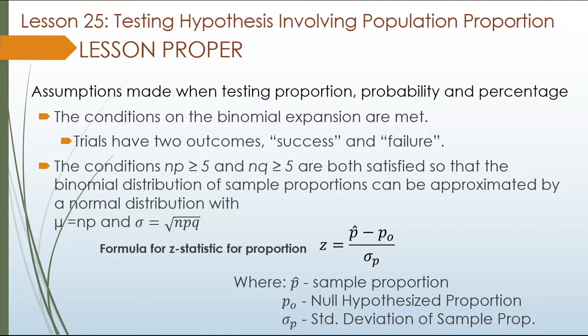This is between the population proportion — what we divide by the total number of population. It's either a success or a failure. Also, the conditions of n times p greater than or equal to 5 and n times q greater than or equal to 5 are both satisfied, so that the binomial distribution of sample proportions can be approximated by a normal distribution with mean equal to np and standard deviation equal to the square root of npq.